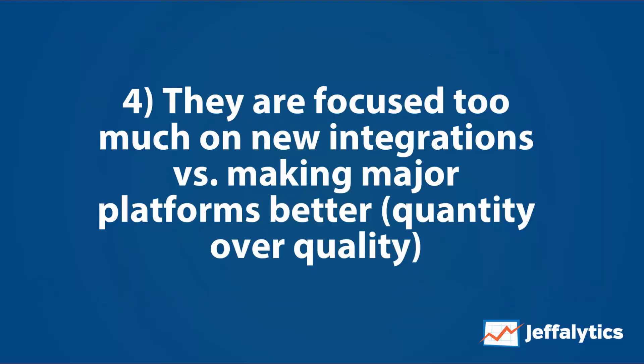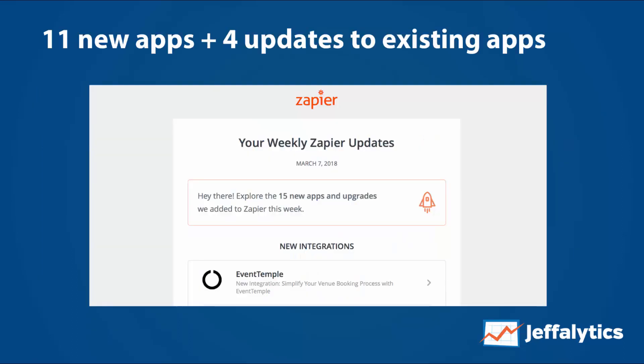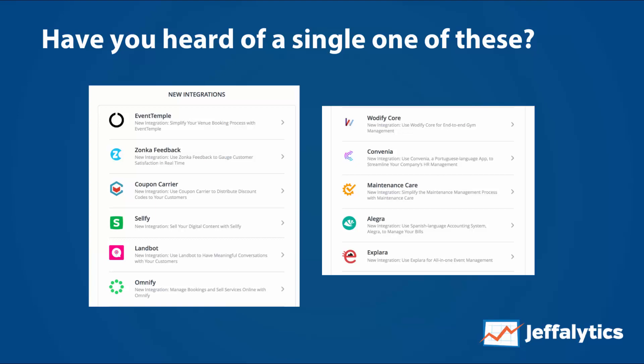Number four: they're focused too much on new integrations versus making major platform integrations better — quantity over quality. A couple of days before I recorded this, I got an email from Zapier about updates: 11 new apps and four updates to existing apps. Have you heard of any of these apps? Your Google Analytics integration still sucks, and a lot of these other integrations sound cool on paper but don't really do much. Fix those, make those better, use the major platforms, and stop going quantity over quality.